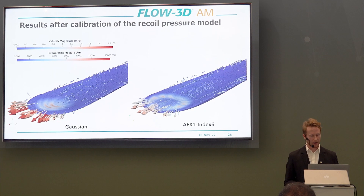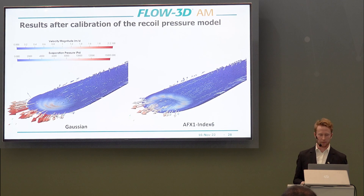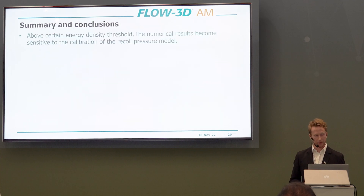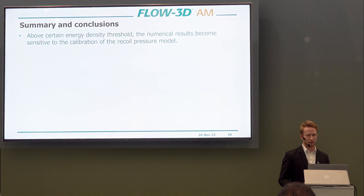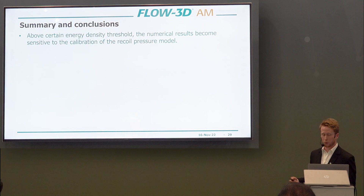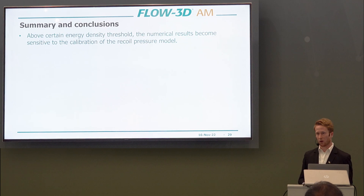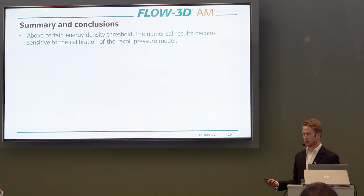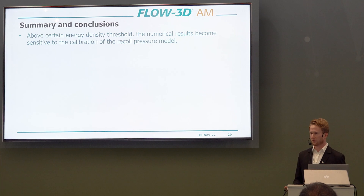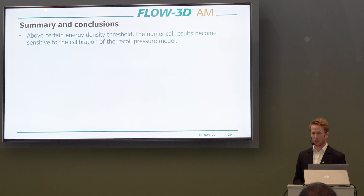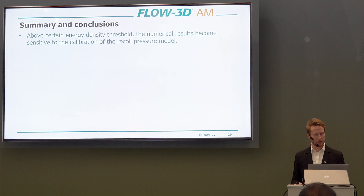These maximum velocities can be responsible for spattering and ejecting material outside of the melt pool. To summarize: above a certain energy density threshold, the numerical result becomes sensitive to the tuning of the recoil pressure model. In conduction mode, the model can often be used without much tuning, which is very convenient. But when approaching higher energy densities — in the transition mode or keyhole regime — good experiments are needed to tune the evaporation model, and then the calibrated model can be used for further experiments.